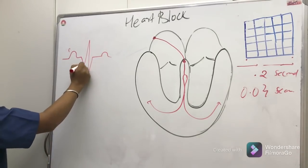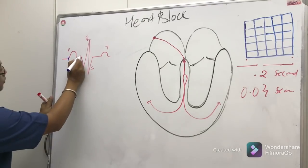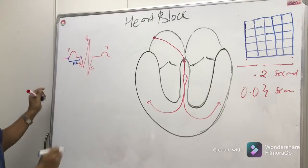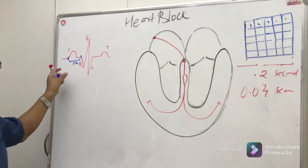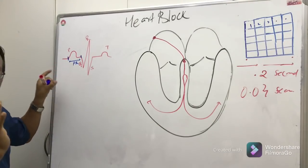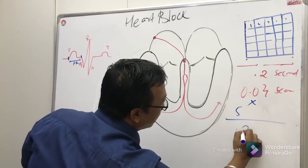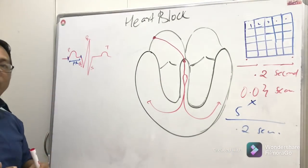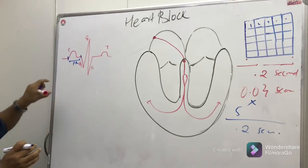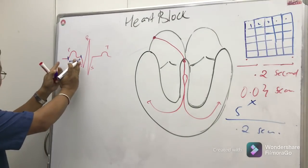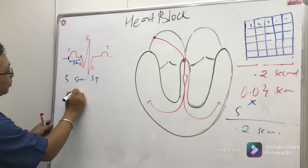In a normal ECG, we have the P wave followed by QRS and T. The PR interval is measured from the start of the P wave to the start of the Q wave. This PR interval consists of five small squares: 5 × 0.04 = 0.2 seconds, or one big square. Counting small squares gives the most accurate calculation. The normal PR interval is five small squares, or 0.2 seconds.